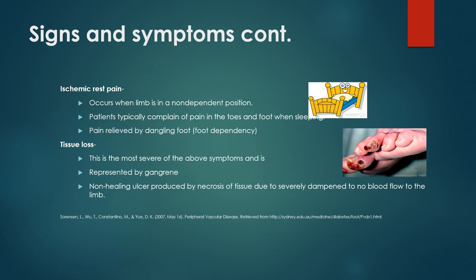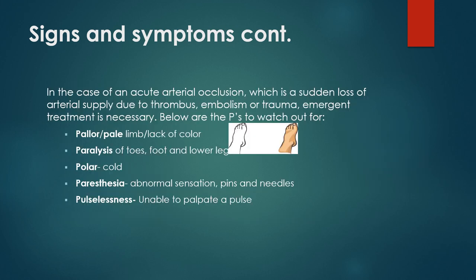Ischemic rest pain occurs when the limb is in a non-dependent position. Patients typically complain of pain in the toes and foot when sleeping; pain is relieved by dangling of the foot, also known as foot dependency. Tissue loss is the most severe symptom, represented by gangrene or a non-healing ulcer produced by necrosis of tissue due to severely diminished to no blood flow. In acute arterial occlusion — a sudden loss of arterial supply due to thrombus, embolism, or trauma — emergent treatment is necessary. The five P's to watch for are: pallor, paralysis, polar (poikilothermia), paresthesia, and pulselessness.